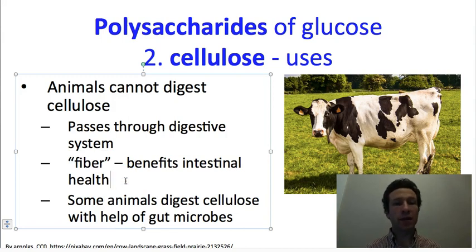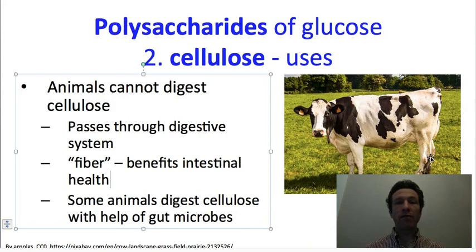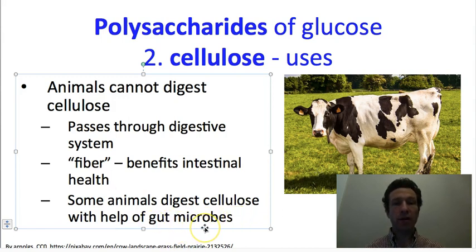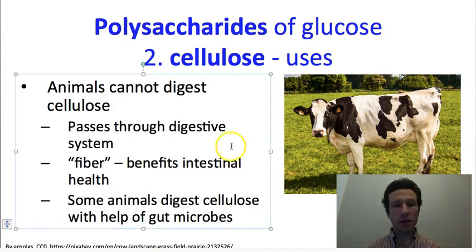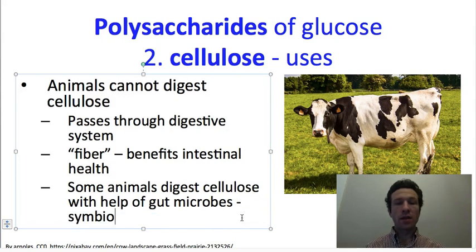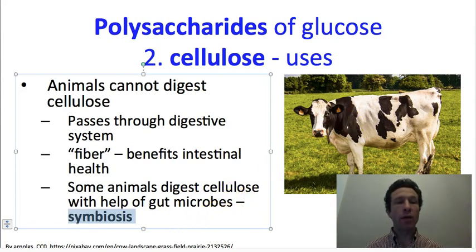We can say generally that fiber benefits our intestinal health. A problem is that we cannot derive any energy from eating cellulose — if you eat something like celery that's largely composed of cellulose, you might get some nutrition but not very many calories at all. However, some animals like cows have figured out a way to extract energy and nutrients from cellulose by partnering with gut microbes — bacteria that are able to break down cellulose into individual monomers. Once those bacteria free the monomers, the animal is able to use that energy and nutrients. This is an example of a symbiosis, a tight association between two different organisms where both derive some benefit.